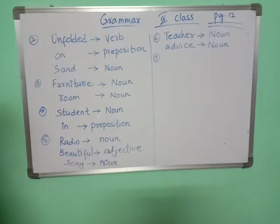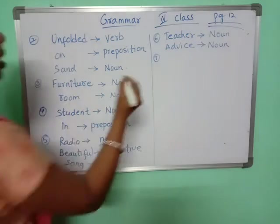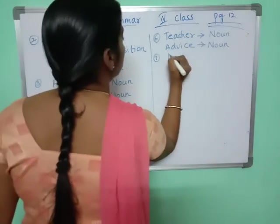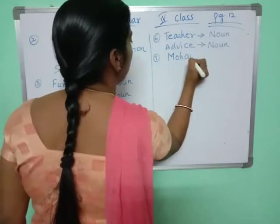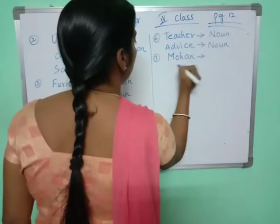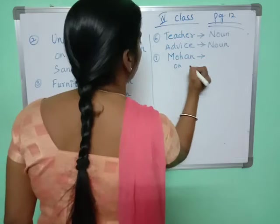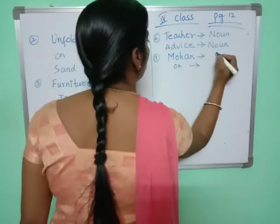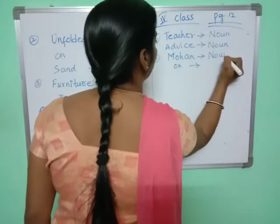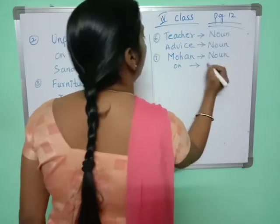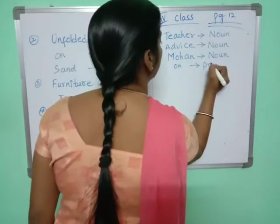Seventh one: Mohan had to hang a picture on the wall. 'Mohan' is underlined and 'on' is underlined. Mohan is a noun and 'on' is a preposition.